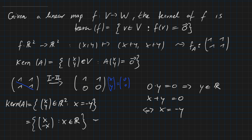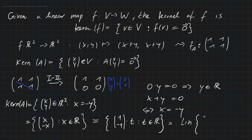We can write this more compactly as (x, minus x) where x is a real number, or even as the vector (1, minus 1) times some scalar t where t is from the real numbers. These are different ways to write down the kernel, and with the last form — considering all scalar multiples of the vector — we can write this as the linear span, usually written as lin{(1, minus 1)}, meaning all scalar multiplications of this vector with any real number.